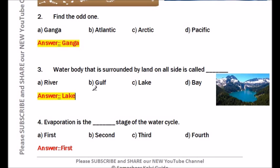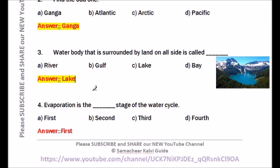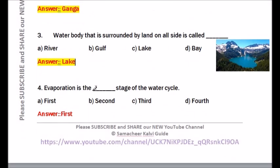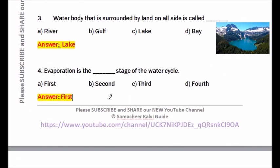Question number four: Evaporation is the dash stage of the water cycle. Options are: first, second, third, fourth. The answer is first. Evaporation is the first stage of the water cycle.